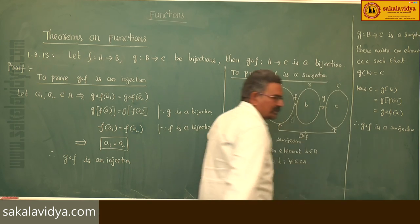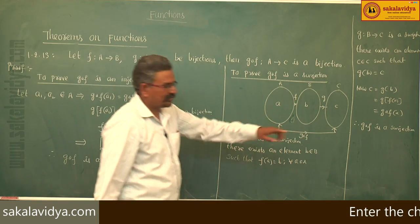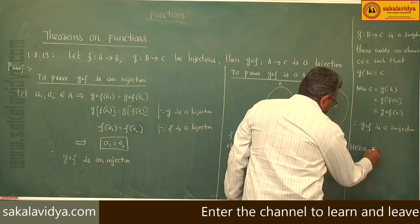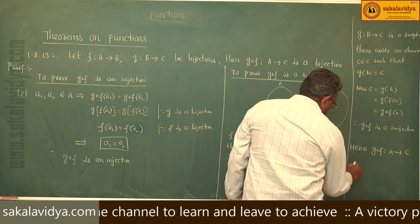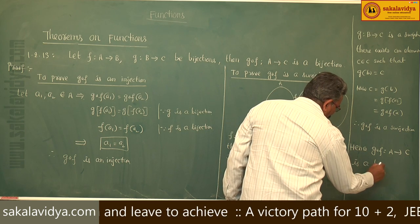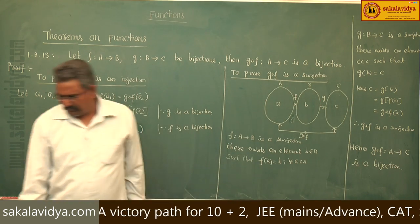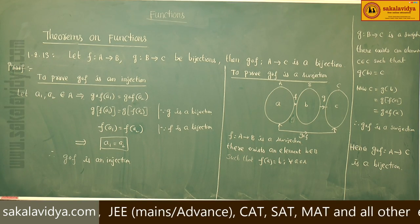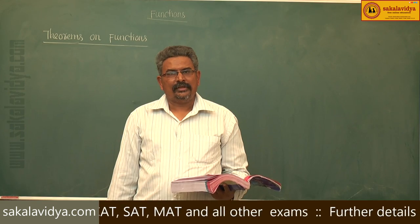Now g∘f is both injection and surjection. Hence, g∘f maps A to C is a bijection.